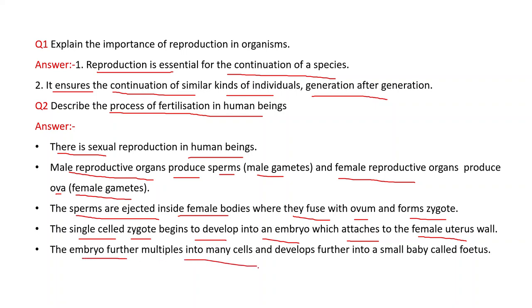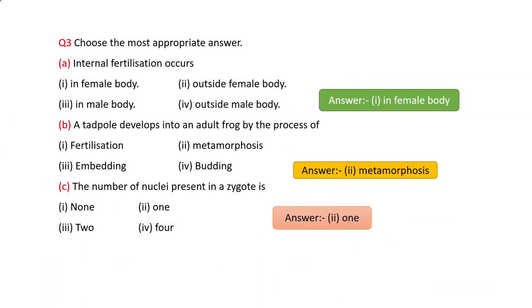The single-celled zygote begins to develop into an embryo, which attaches to the female uterus wall. The embryo further multiplies into many cells and develops further into a small baby called a fetus. This is the process of fertilization in human beings.